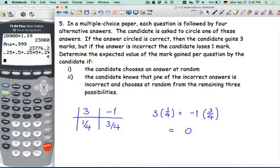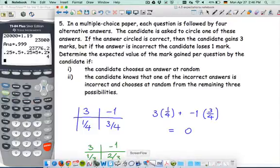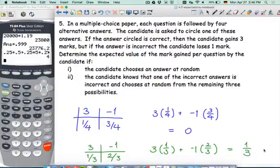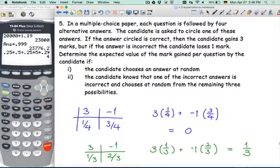Part two. The candidate knows that one of the incorrect answers is incorrect and chooses at random from the remaining three possibilities. So that changes the probability. You still get three marks for the correct answer, but it's like you had only three choices, so one out of three. And here you still lose a mark, but you know one of them is incorrect, so you're not going to pick that one. So the expected value is three times one third plus negative one times two thirds, and that's one minus two thirds, so that'll be one third. Good. So by knowing at least one is incorrect, even if you don't know the correct answer, you can be smarter than a monkey on the long term and outperform them on this test.